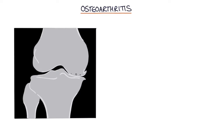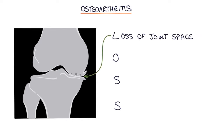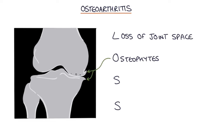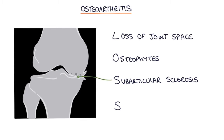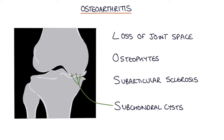These abnormalities can be seen on an x-ray, and the key mnemonic for remembering the four key x-ray changes in osteoarthritis is LOSS — L-O-S-S. L stands for loss of joint space, where the joint space becomes narrower and the bones come closer to each other. O is for osteophytes — little spurs of bone that come out of either end of the joint. The first S is for subarticular sclerosis, which is increased density of the bone along the joint line. The second S is for subchondral cysts — small fluid-filled holes in the bone along the joint line.